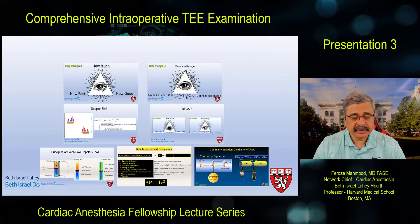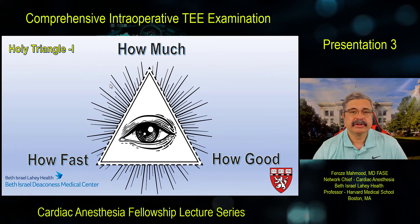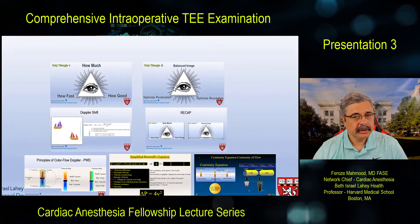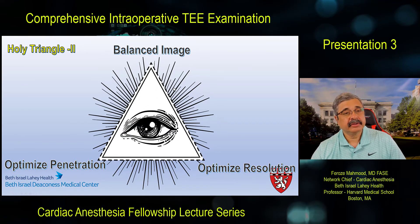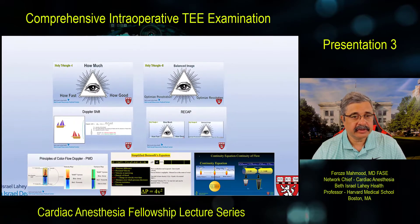Before we start, let's recap what we've learned in the last two presentations. Our entire imaging is governed by the holy triangle number one, which demonstrates how much, how fast, and how good we want to see something. Holy triangle number two is what we want for an image: depth and resolution — do we want a balanced image, optimize for penetration, or optimize for resolution?